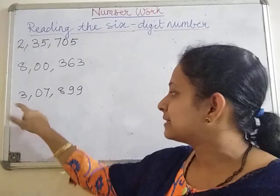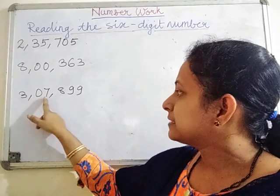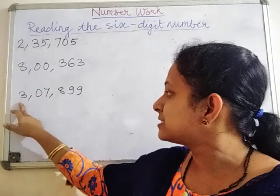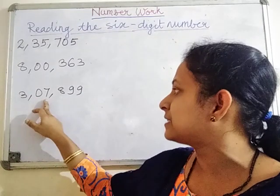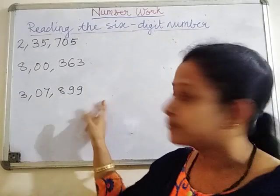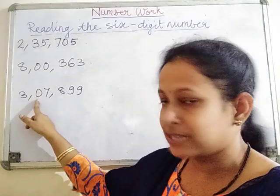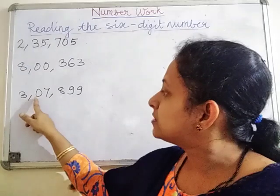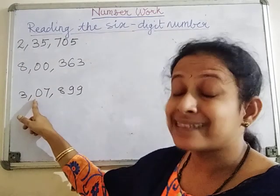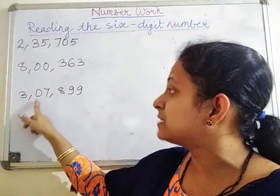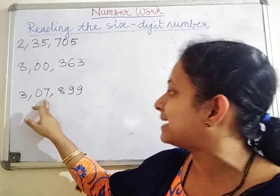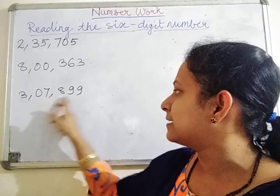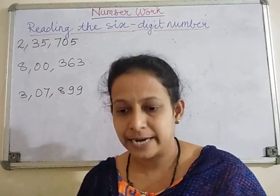The last number is three lakh. In the ten thousands place there is zero, so you will not say seventy thousand. Zero ten-thousands means no ten-thousands. So you read it directly as seven thousand. The number is three lakh, seven thousand, eight hundred and ninety-nine. Is that clear students?